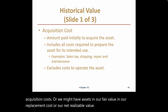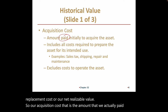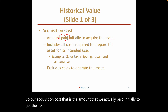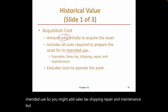Acquisition cost is the amount actually paid initially to acquire the asset. It includes all costs required to prepare the asset for its intended use — such as sales tax, shipping, and repair and maintenance — but it excludes the cost to operate the asset.